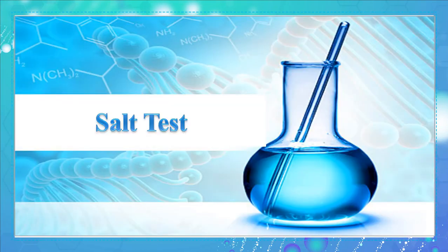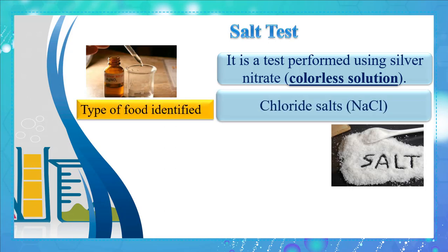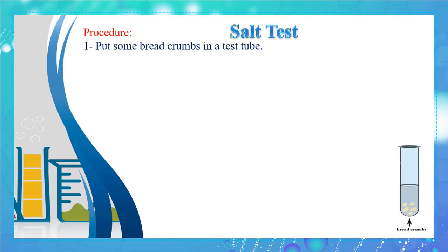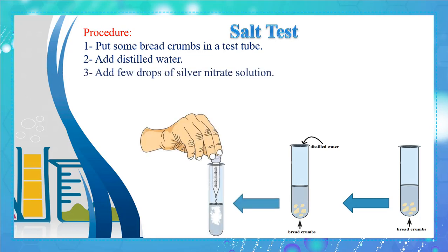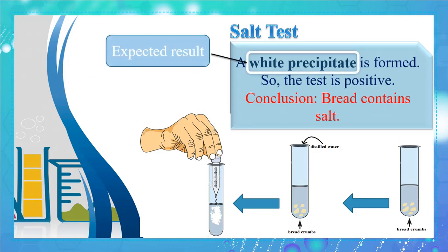Finally, we have the salt test. It is a test performed using silver nitrate, which is a colorless solution. The type of food identified is chloride salts, like NaCl. Procedure: put some breadcrumbs in a test tube, add salt water, then add a few drops of silver nitrate solution and observe the result. A white precipitate is formed. The white precipitate is the expected result, so the test is positive and we conclude that bread contains salt.